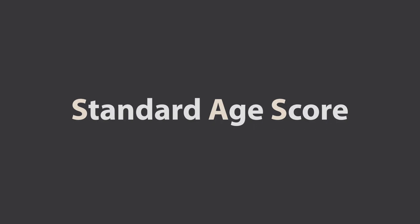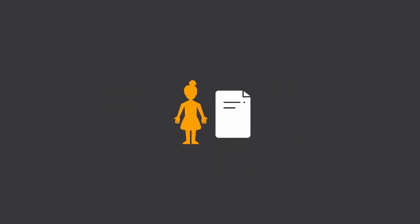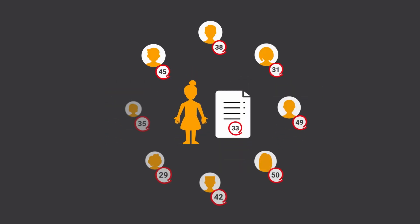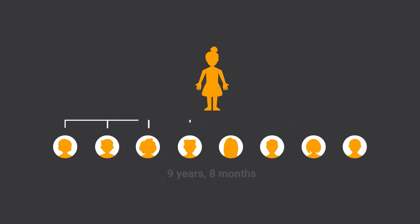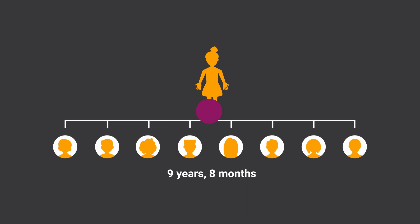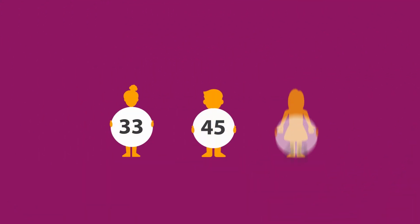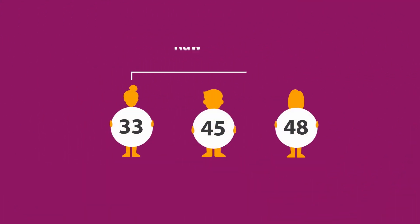The Standard Age Score, or SAS, compares a learner's performance to others of the exact same age nationally. The SAS is based on learners' raw scores, which are how many marks or points they achieved in the assessment.